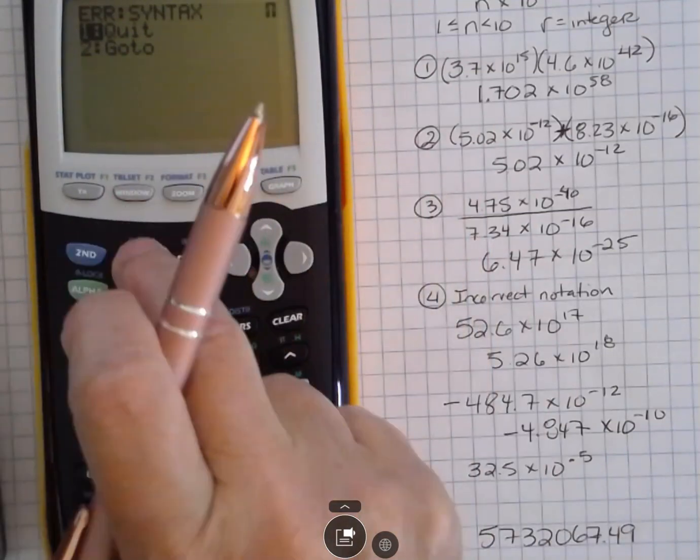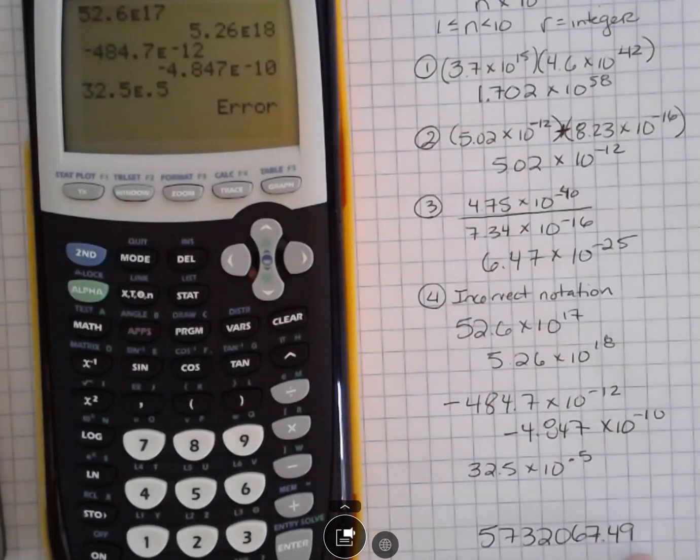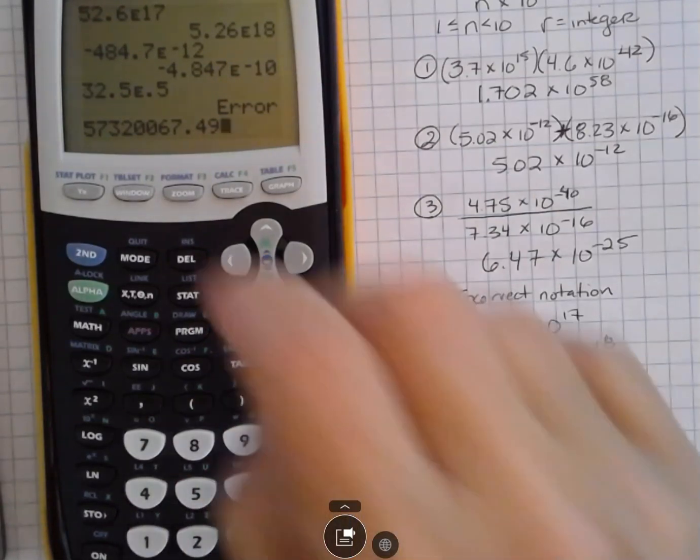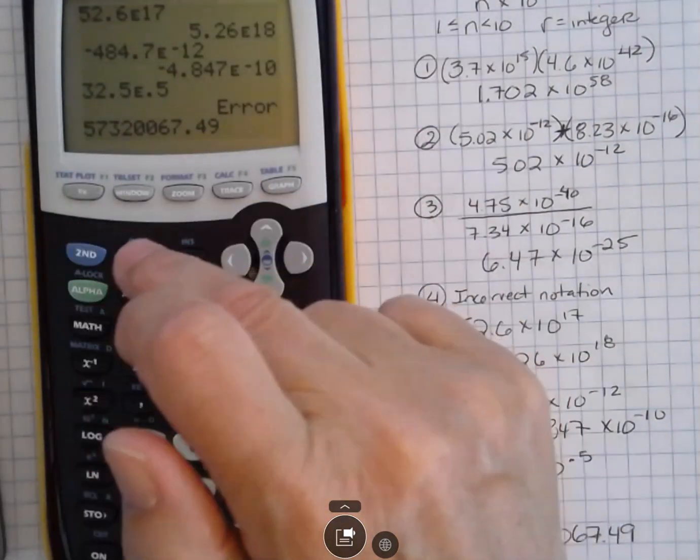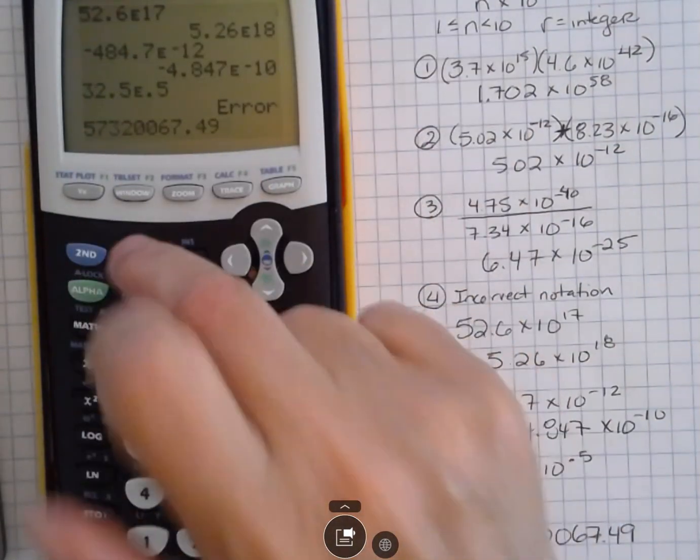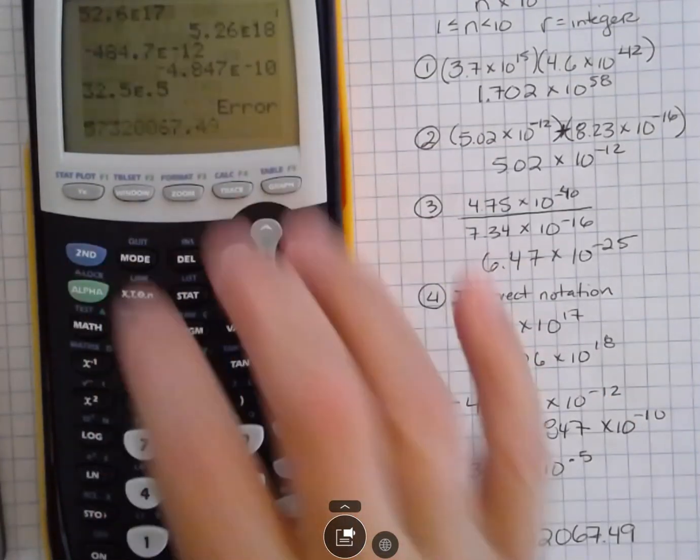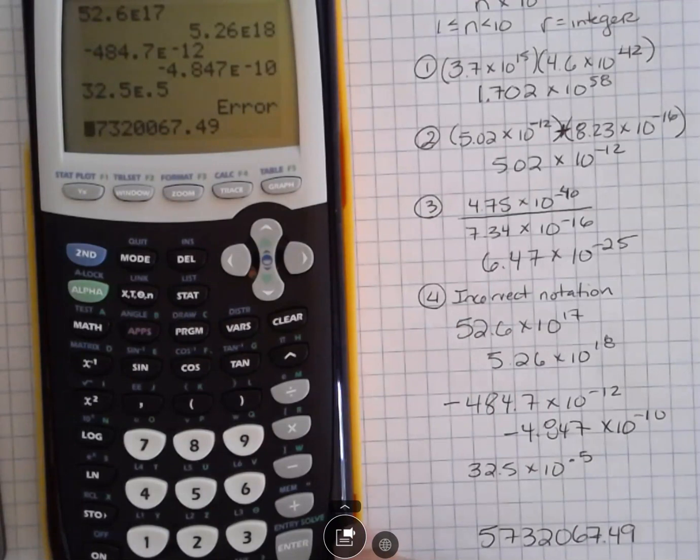The other thing you can do is if you have a number like this, 5, 7, 3, 2, 0, 6, whatever. I don't even know what I've typed in there. It doesn't matter. I put some number, and I want to know, like, what would that be in scientific notation? Well, what I can do is go up here to mode, and then go over to scientific notation and hit enter. Enter, then quit, and then hit enter.